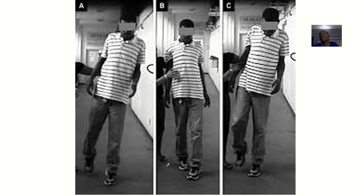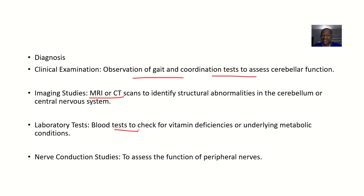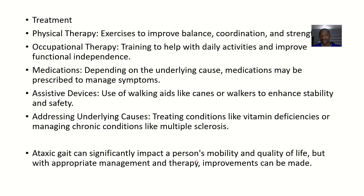For diagnosis, you observe the gait and perform coordination tests to assess cerebellar function. Imaging studies like MRI scans and CT scans can help identify structural abnormalities in the cerebellum and central nervous system. Laboratory tests such as blood tests can check for vitamin deficiencies or other underlying metabolic conditions. Nerve conduction studies are used to assess the function of peripheral nerves.